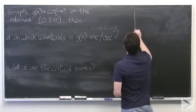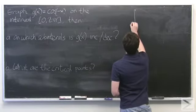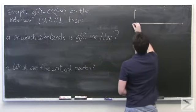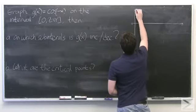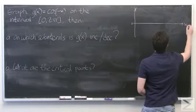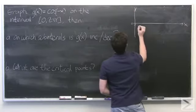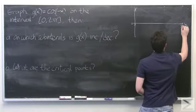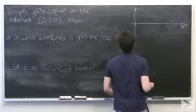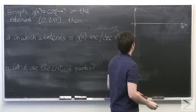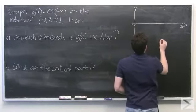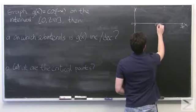So let's set up a graph, or coordinate axes rather. We know we're going from 0 to 2 pi. And since this is a trigonometric function, we're probably also going to be interested in what happens at pi.